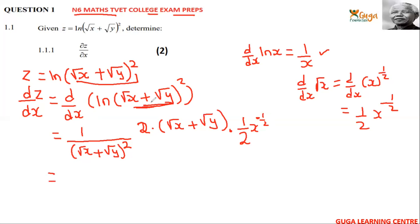And then d/dx of y, that will give you zero. So now here, this 2 will cancel with this 2. The 1 here will cancel with the 1 there.